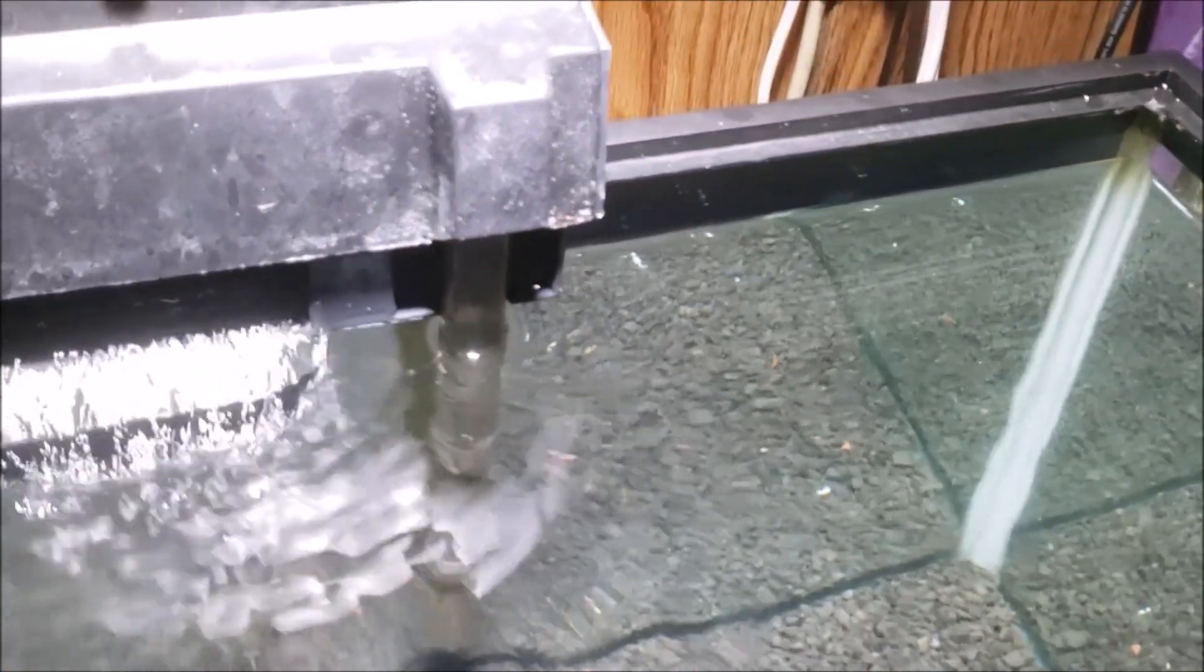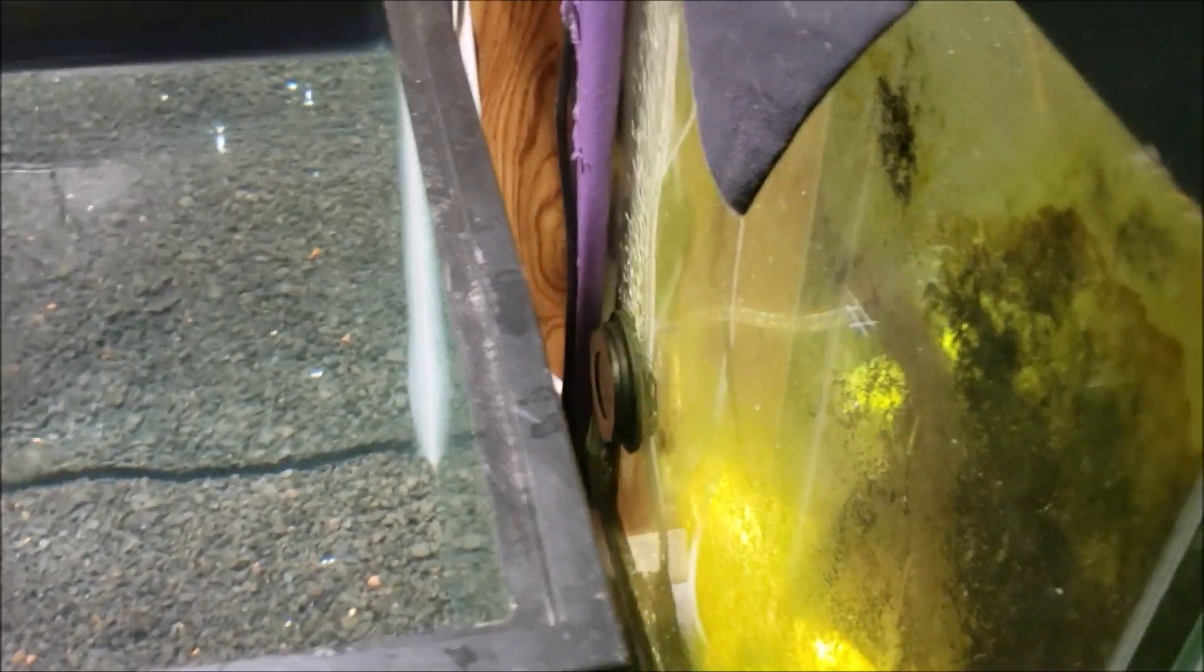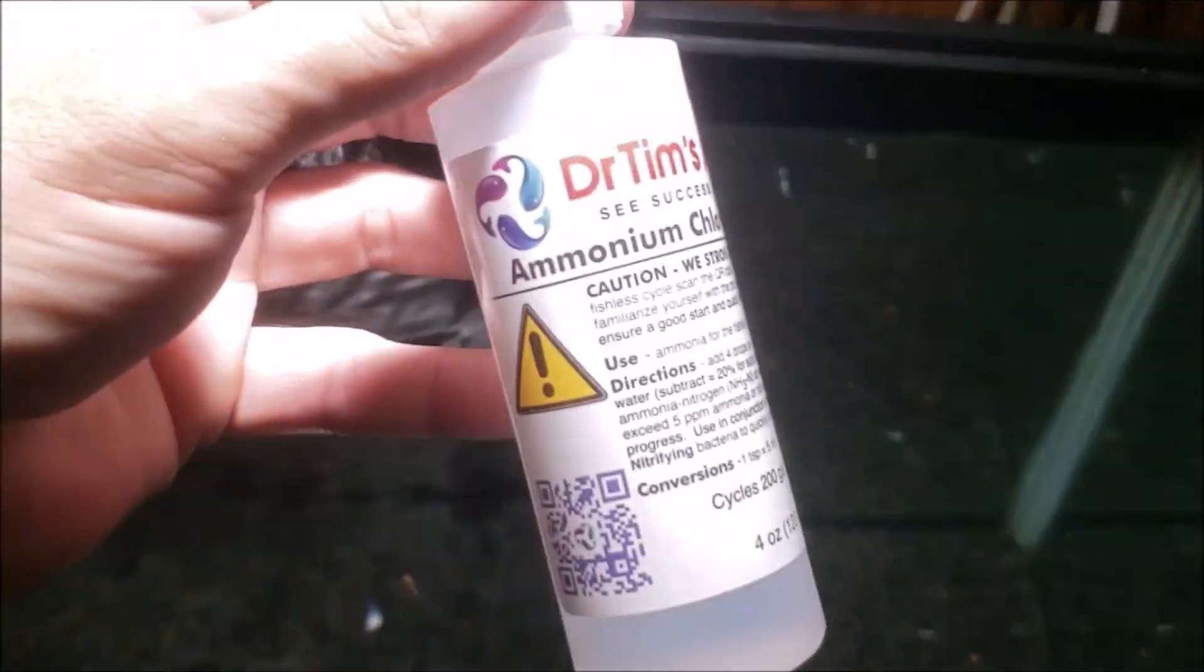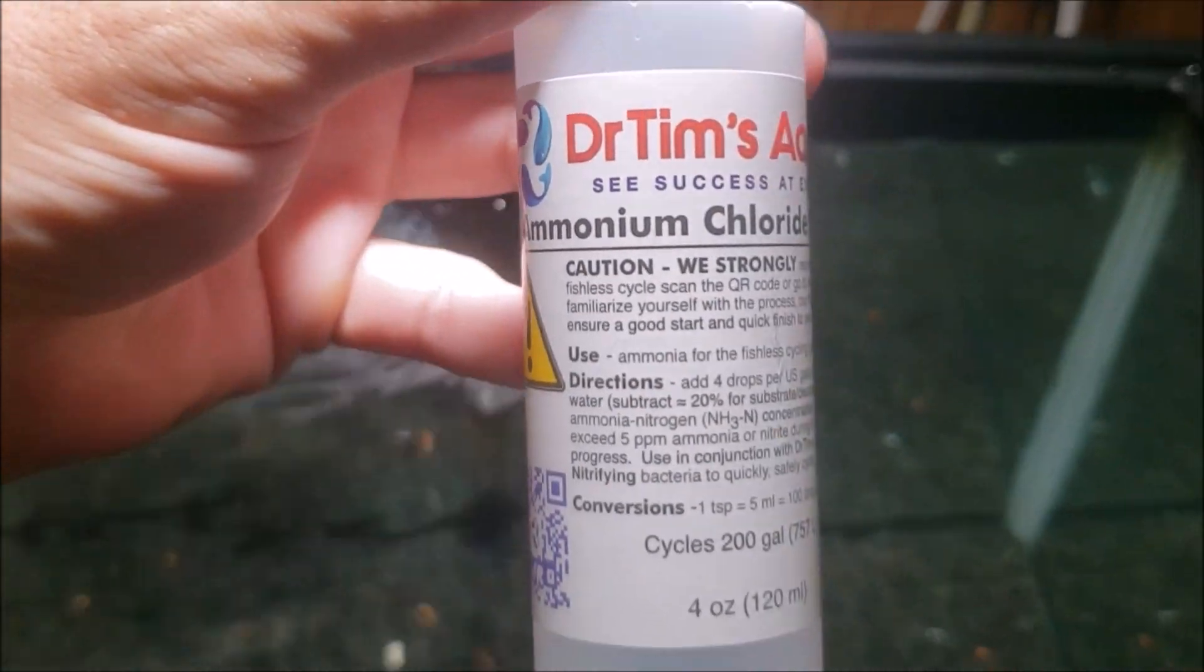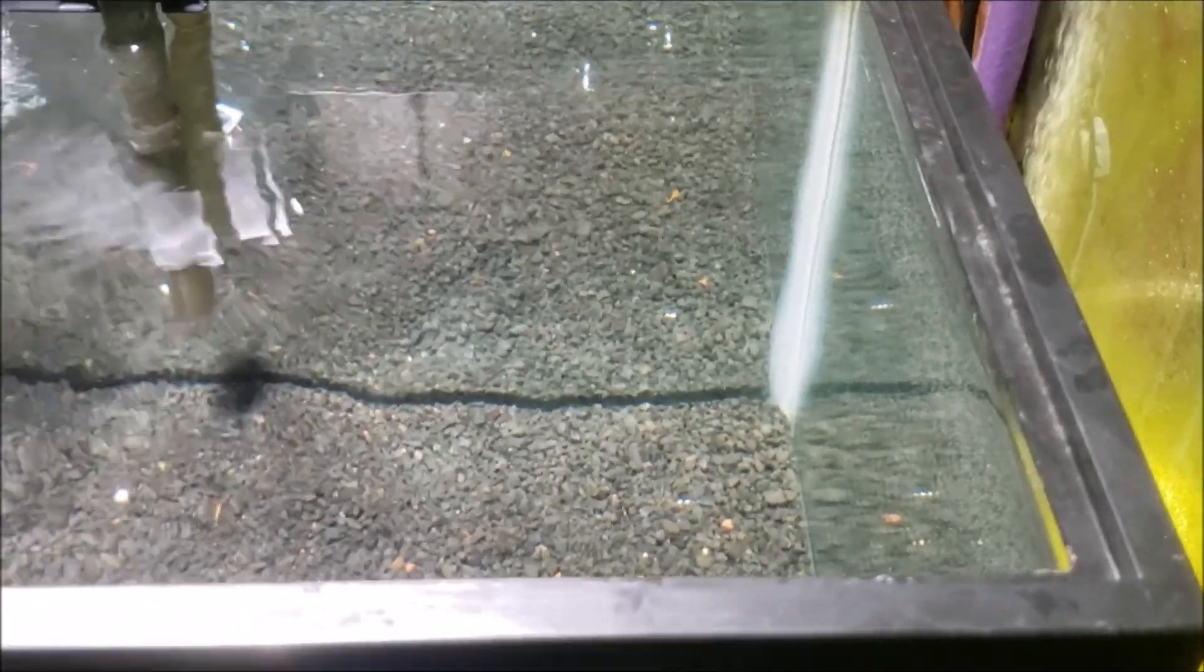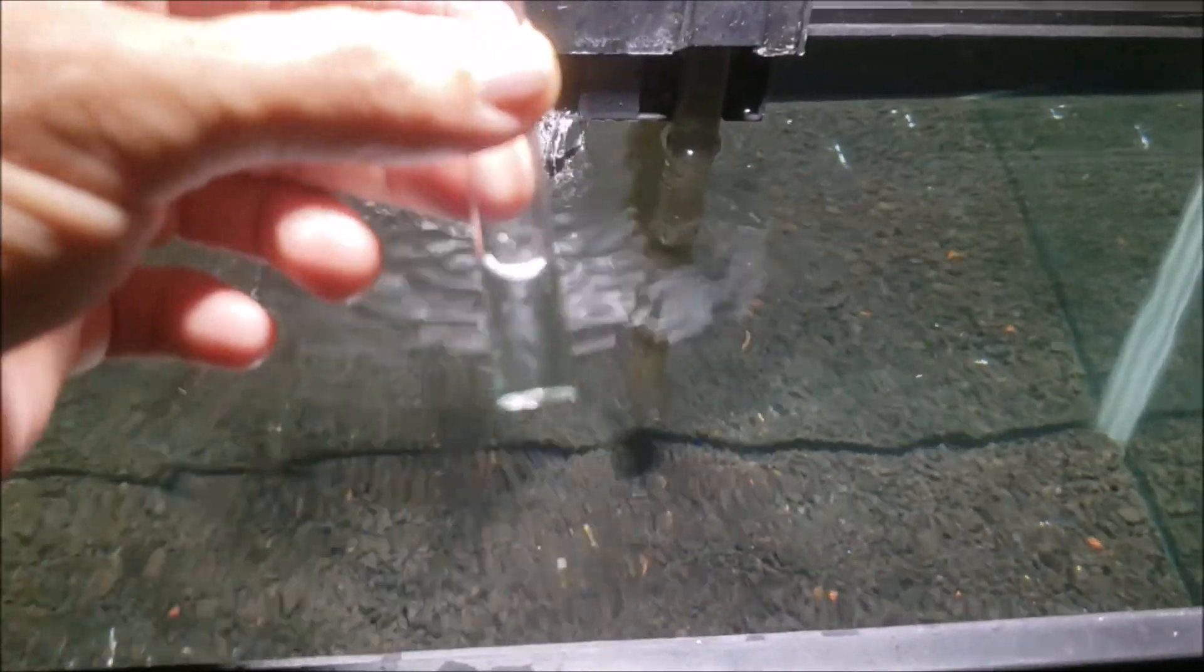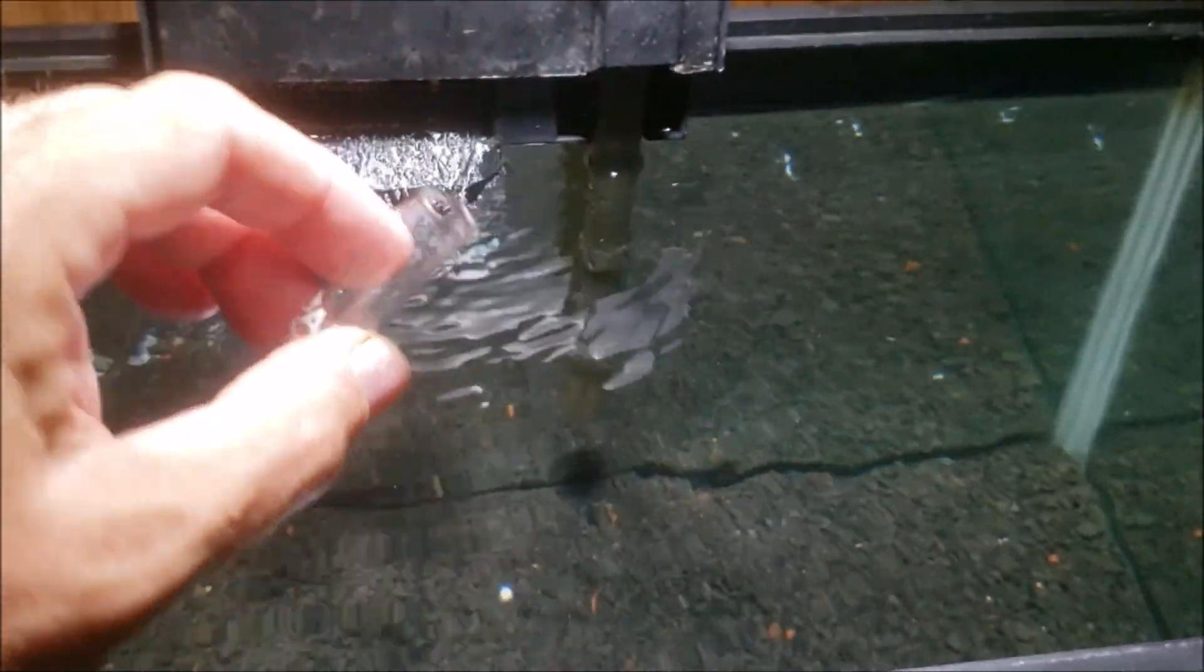What we're going to do now is add some of Dr. Tim's ammonium chloride solution. That is going to give us some ammonia in the water and we're going to find out whether or not we can start addressing that ammonia almost immediately. I tried to measure out 20 drops but it came out of the bottle a little fast, so this is probably a little more than 20 drops.